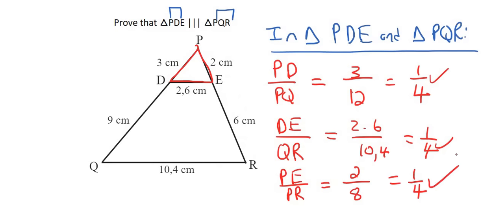So we say therefore triangle PDE is similar to triangle PQR. Why? Now we don't say angle, angle, angle because we're not using angles. We rather say corresponding sides in proportion. Like that. Awesome guys. So that's it. That is how you do similarity. Thank you for watching.